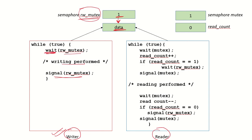We know that wait will decrement the semaphore and signal will increment the semaphore. So waiting on the read_write_mutex semaphore will allow the writer process access to the data. It will make changes to the data and then once it has finished writing, it will signal the read_write_mutex semaphore — meaning it is going to release the semaphore.